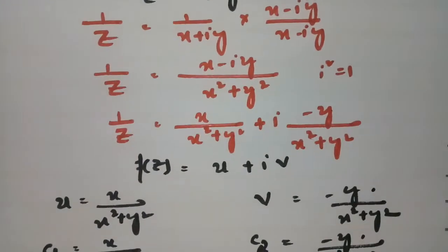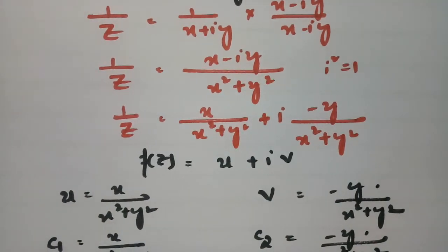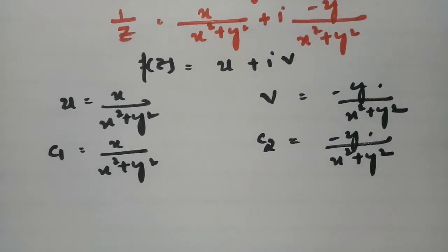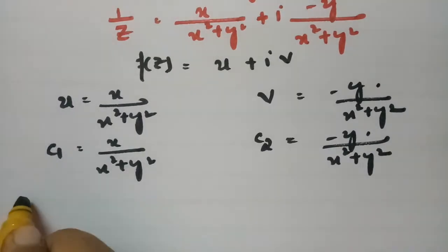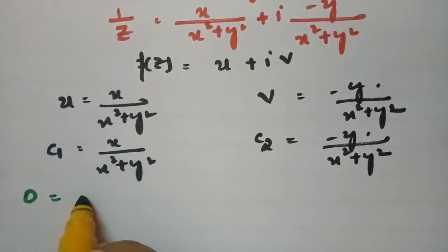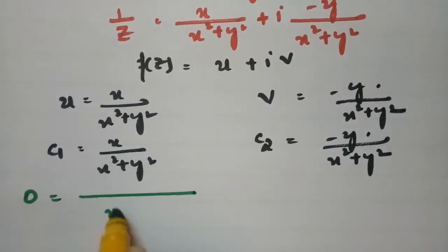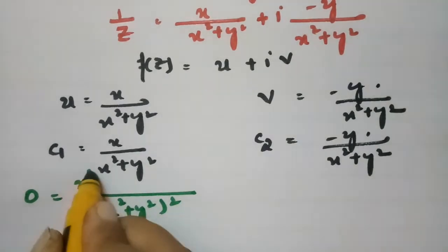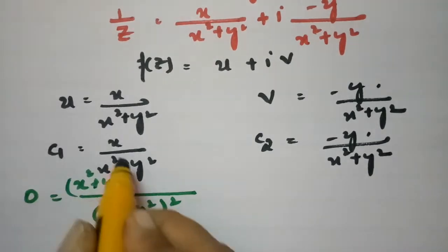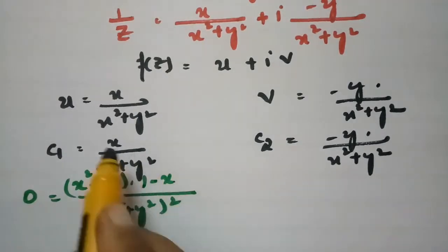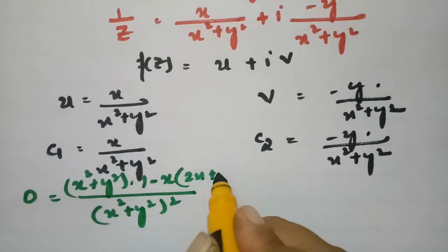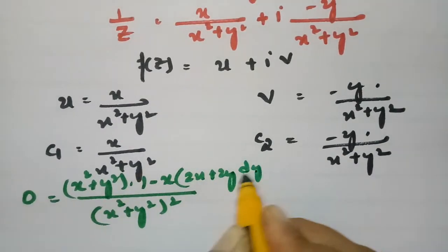If the curves u = c1 and v = c2 intersect orthogonally, then the product of their slopes m1 × m2 should equal -1. To find the slopes, we differentiate with respect to x. For the constant c1 the derivative is 0, and applying the quotient rule gives denominator (x² + y²)².